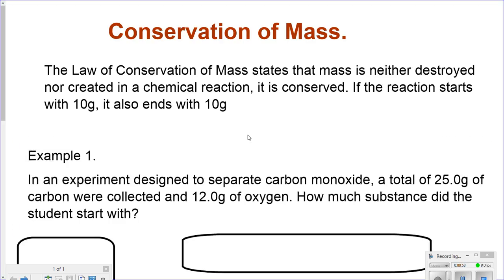Sample 1. In an experiment designed to separate carbon monoxide, a total of 25 grams of carbon were collected and 12 grams of oxygen was also collected. If I ended up with 25 grams of carbon and 12 grams of oxygen, how much did I start with?